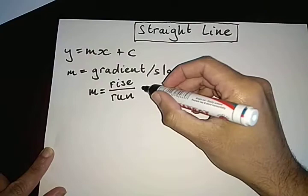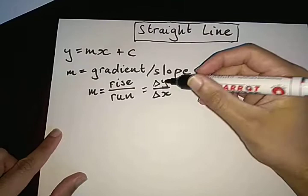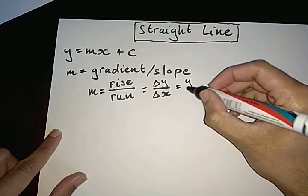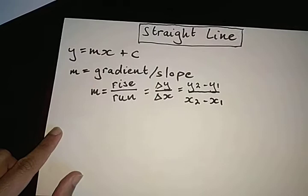And another way of representing this is to actually say that the gradient is the change in y. Remember, delta, which is this triangle symbol, is the change in the y over the change in the x. And this is the formula that you're probably more familiar with: y2 minus y1 over x2 minus x1.